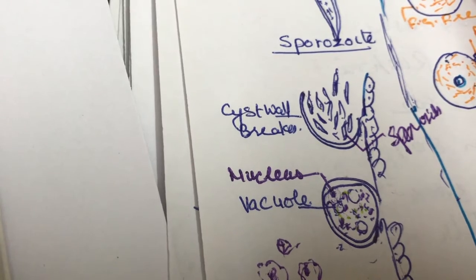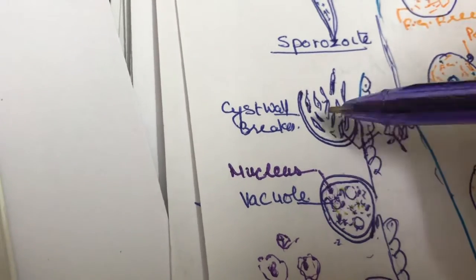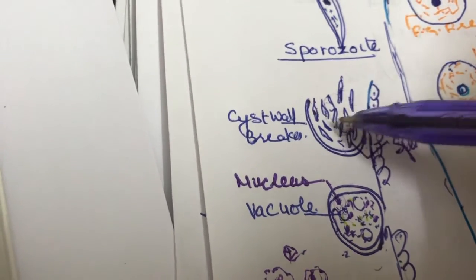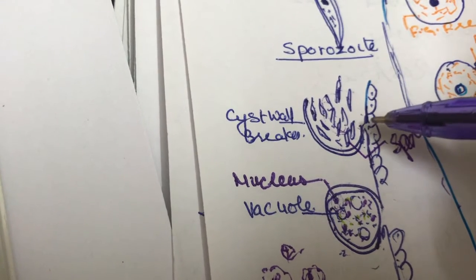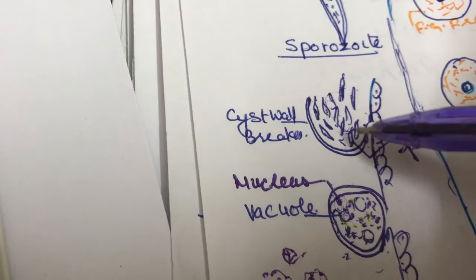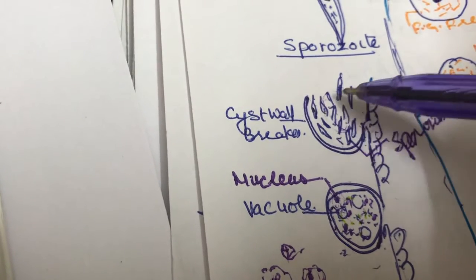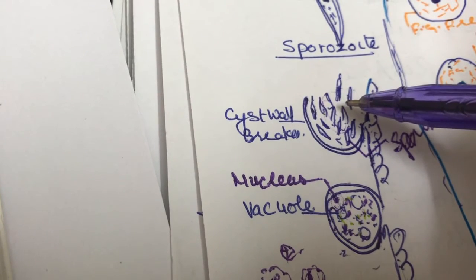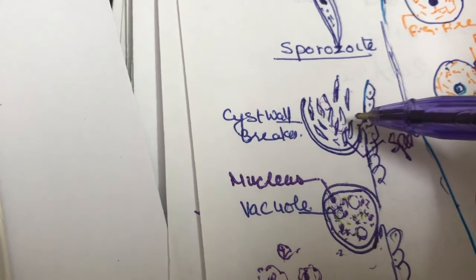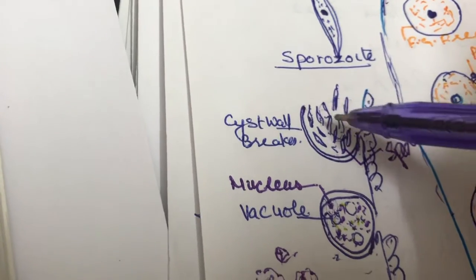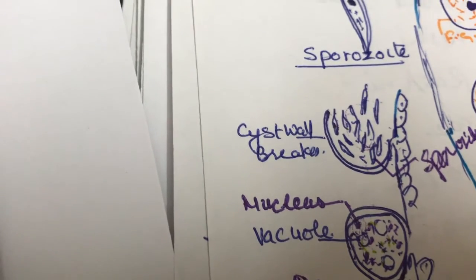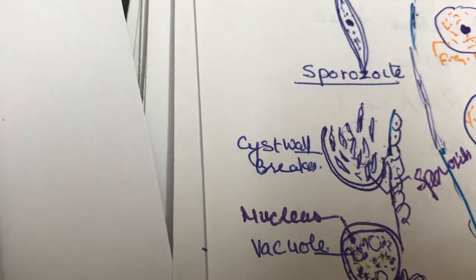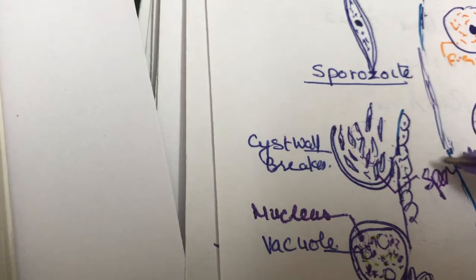Some cytoplasm of the oocyst is left unused in the formation of the sporozoites. They are about 10,000 sporozoites in the oocyst. They are arranged around the vacuole and soon they break the wall.